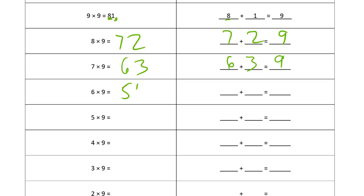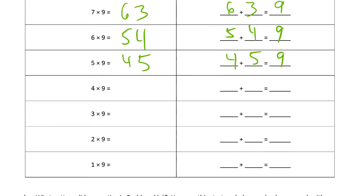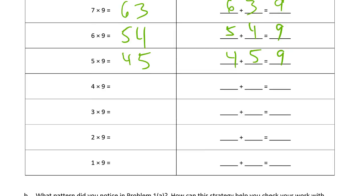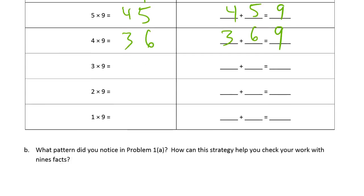6 times 9 is 54, 5 plus 4 equals 9. 5 times 9 is 45, 4 plus 5 also equals 9 when you add those digits together. 4 times 9 is 36, that's 3 plus 6 equals 9. 3 times 9 is 27, that's 2 plus 7, and that equals 9.